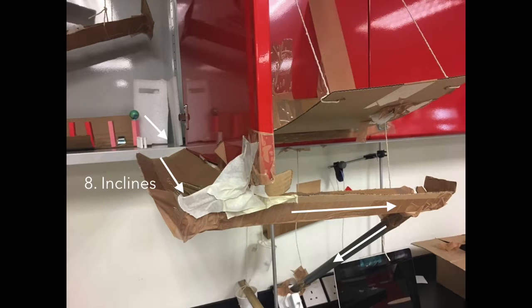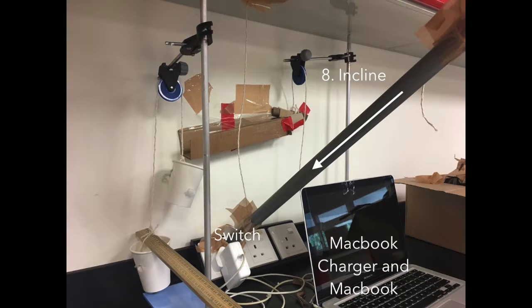The marble rolls down another series of inclines with a PVC pipe connected to the last one. When it passes the PVC pipe, it pushes another marble into the pipe, which is positioned in an incline. The end of the pipe is connected directly to a switch, so when the falling marble hits it, the switch turns on, at the same time switching on the MacBook charger.